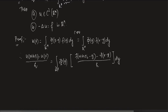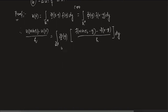The idea behind the change of variable is this: if I don't do it, I have to differentiate φ, which has a singularity at x = y. I want to avoid that. So I replace it by φ(y), shifting the singularity to y = 0, and put everything on f, since f is C².